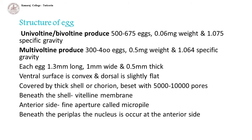Univoltine or bivoltine moths produce 500 to 675 eggs having 0.06 mg weight and 1.075 specific gravity, where specific gravity of an egg indicates the quantity of shell relative to other components of the egg. Multivoltine moths produce 350 to 400 eggs having 0.5 mg weight and 1.064 specific gravity. Each egg measures 1.3 mm long, 1 mm wide and 0.5 mm thick.